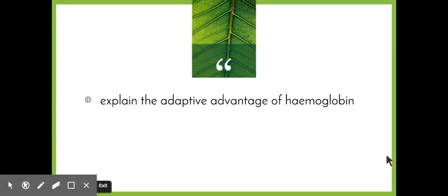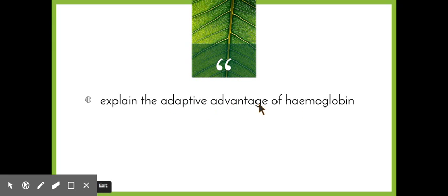Welcome to the next video in our maintaining a balance series. Today we're going to be looking at the dot point: explain the adaptive advantage of hemoglobin. It's an explained dot point so we need to look at cause and effect, and adaptive — how it has changed — advantage, what makes it good, and looking particularly at this molecule called hemoglobin.